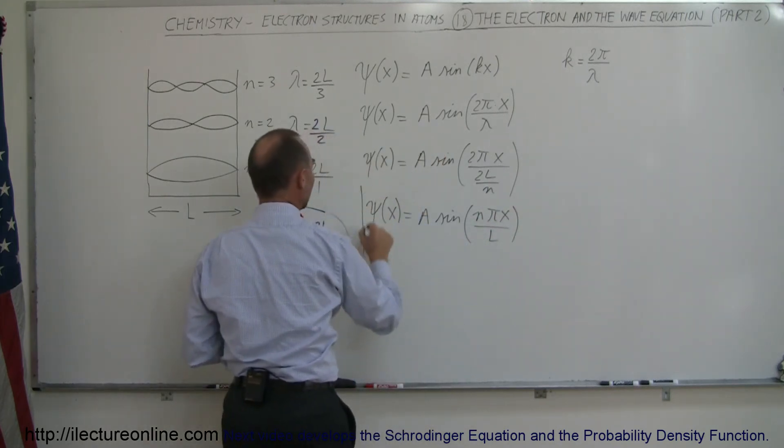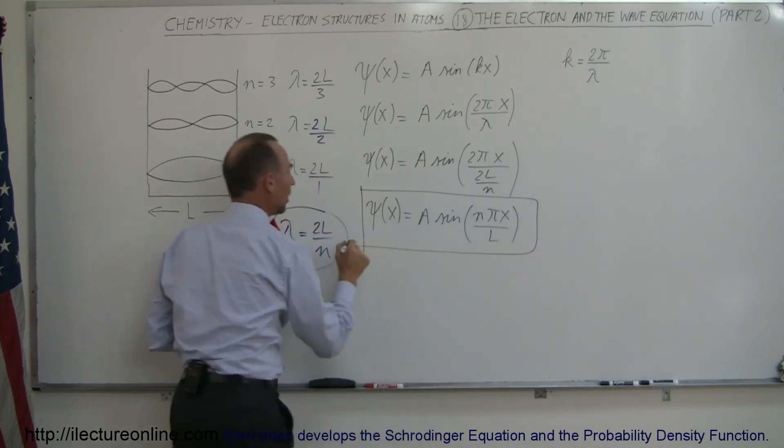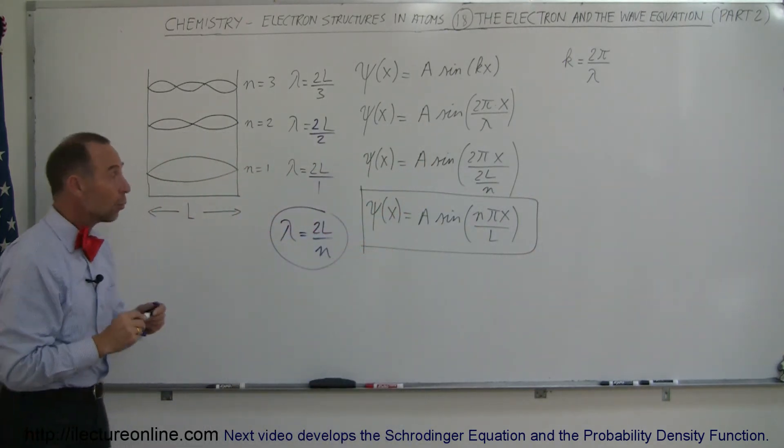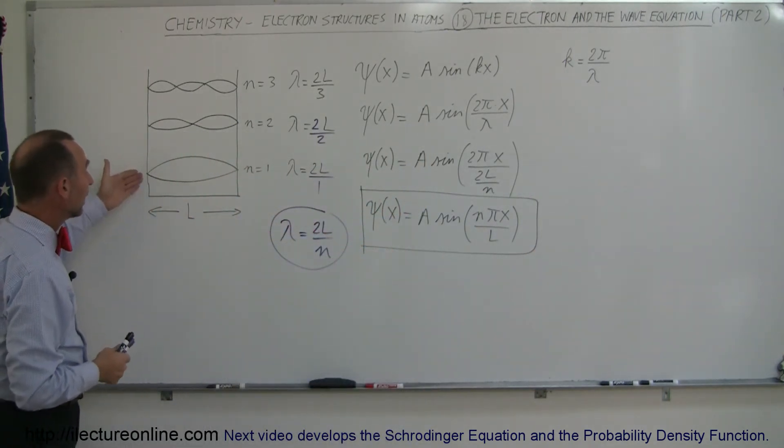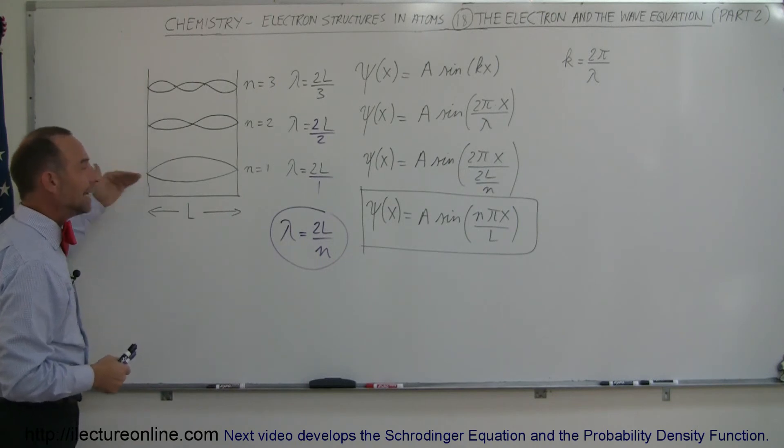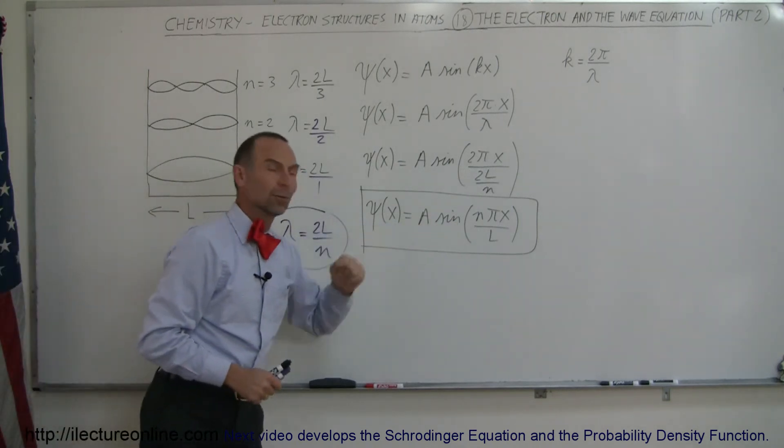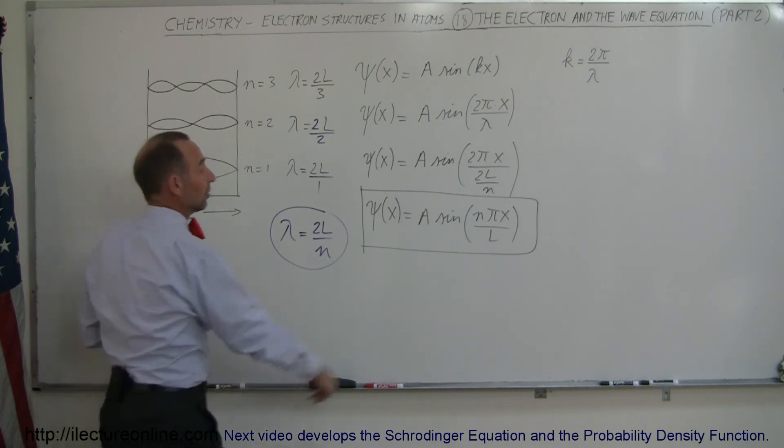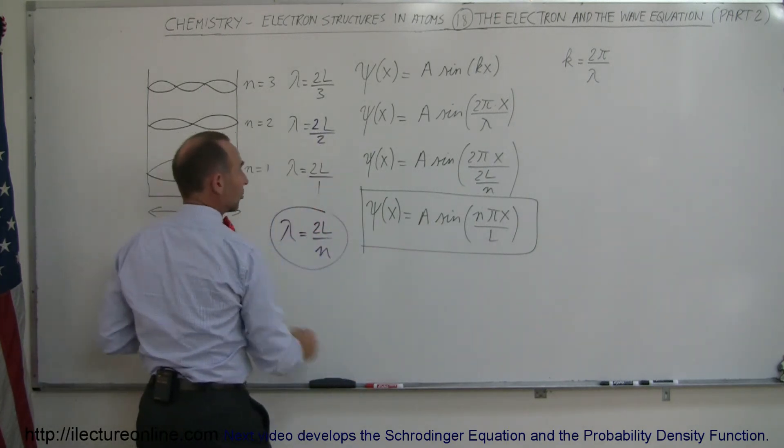And this now becomes the equation that describes the wave of an electron in a one-dimensional box for any energy state n, which is really nice, as a function of L, which is the size of the box,